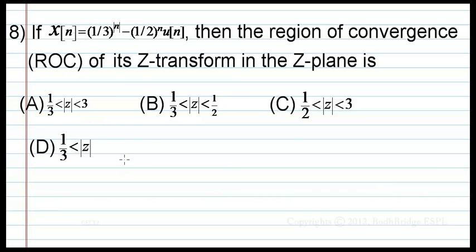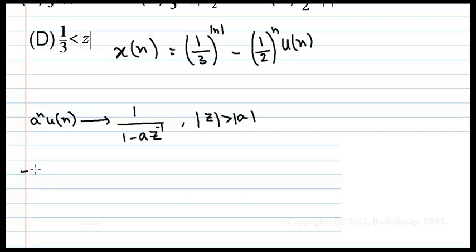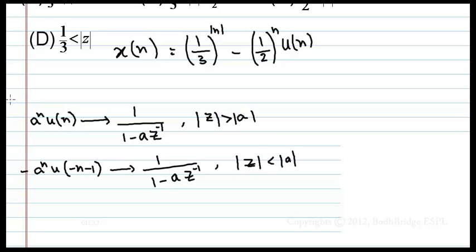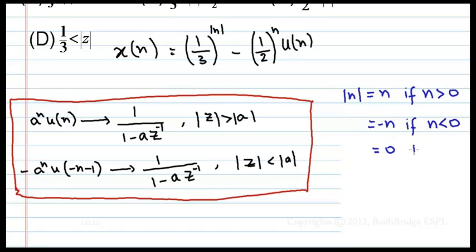First of all, always remember: a^n · u(n) has Z-transform 1/(1 - az⁻¹) with ROC |z| > |a|. And -a^n · u(-n-1) has Z-transform 1/(1 - az⁻¹) with ROC |z| < |a|. These are very important Z-transform formulas. Also recall the definition of |n|: |n| = n if n > 0, |n| = -n if n < 0, and |n| = 0 if n = 0.